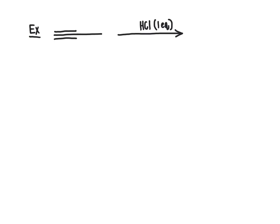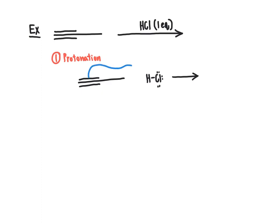The first step of this reaction mechanism: if there is a relatively strong acid present, such as HCl or sulfuric acid, the first step is generally going to be protonation. We protonate the organic molecule by taking our alkyne and using one of its sets of pi electrons as the base to grab a proton from HCl. This step is analogous to addition reactions to alkenes, where the pi bond came over, grabbed a proton from the acid, forcing the hydrogen-chlorine bond to break, leaving us with chloride anion and our carbocation intermediate.